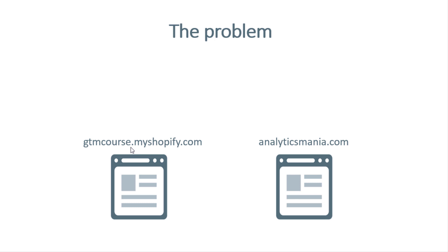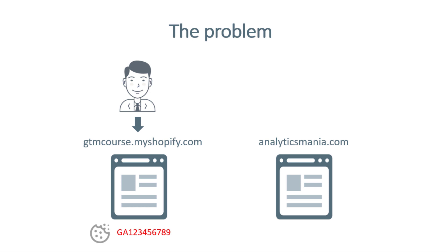The first one is gtmcourse.myshopify.com and the second one is analyticsmania.com. Now let's say I have a visitor who landed on the first website, and Google Analytics automatically stored a cookie on that visitor's browser. Somewhere on this myshopify.com website, there is a link that the visitor clicked, and that visitor was redirected to my second website.